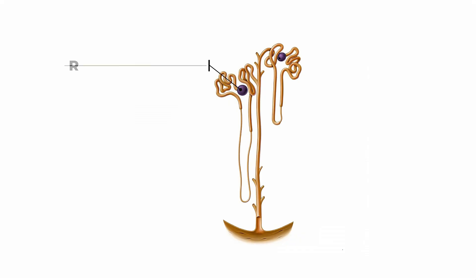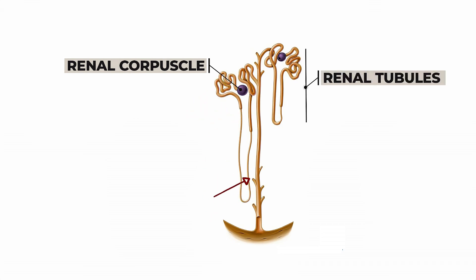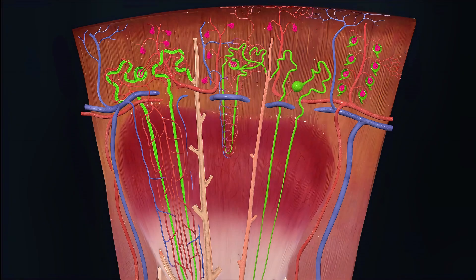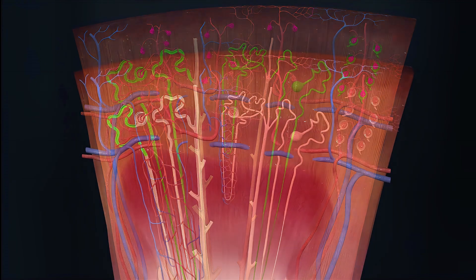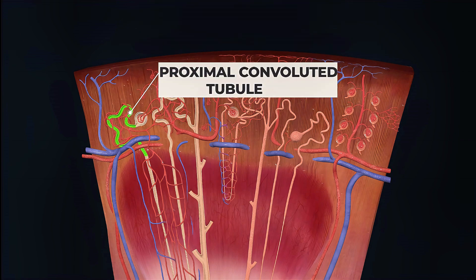Below the Bowman's capsule, the nephron's tubular system starts, which is called the renal tubule. The renal tubule is divided into four parts. The first part starts from the Bowman's capsule and ends in the renal cortex region, called the proximal convoluted tubule, or PCT.